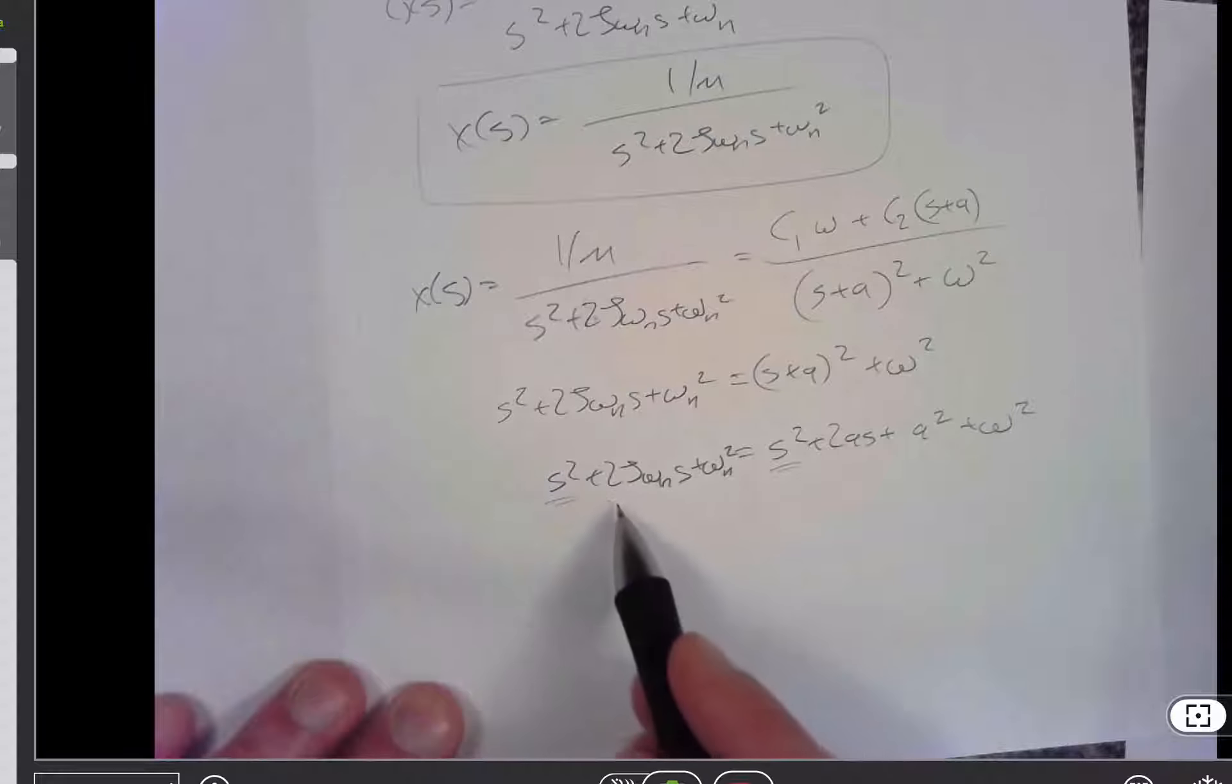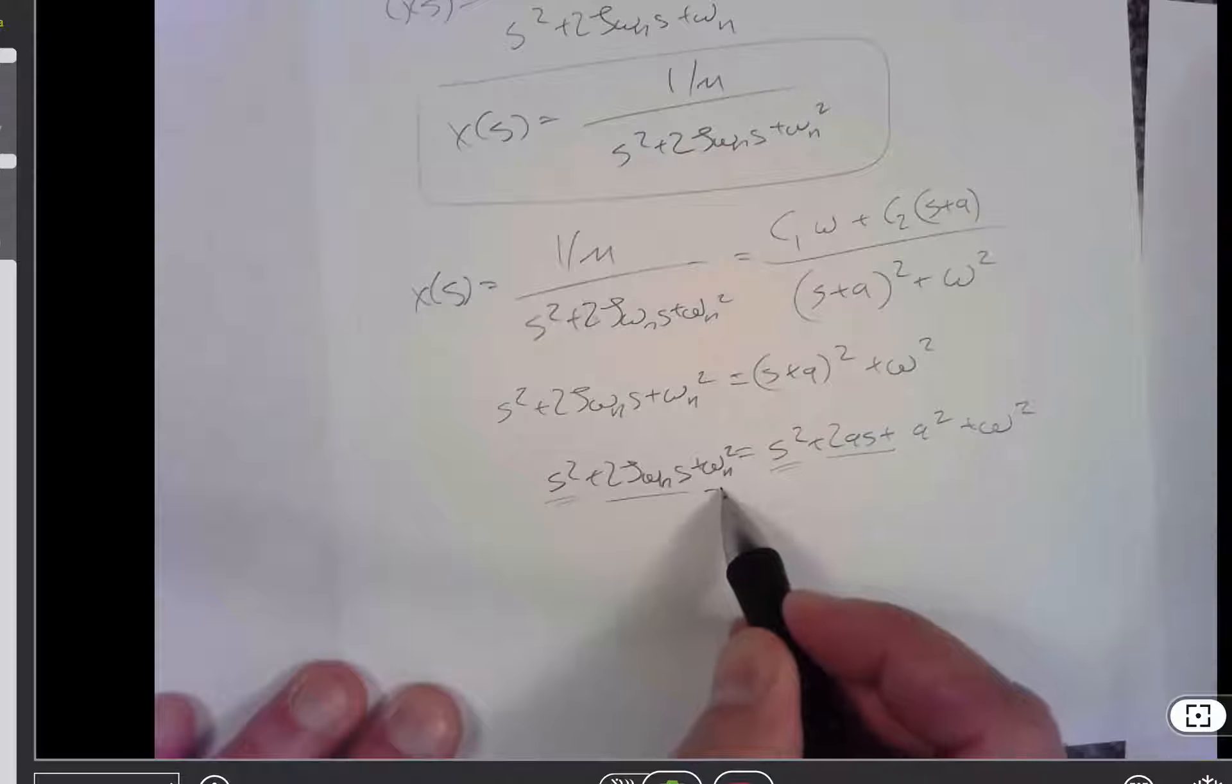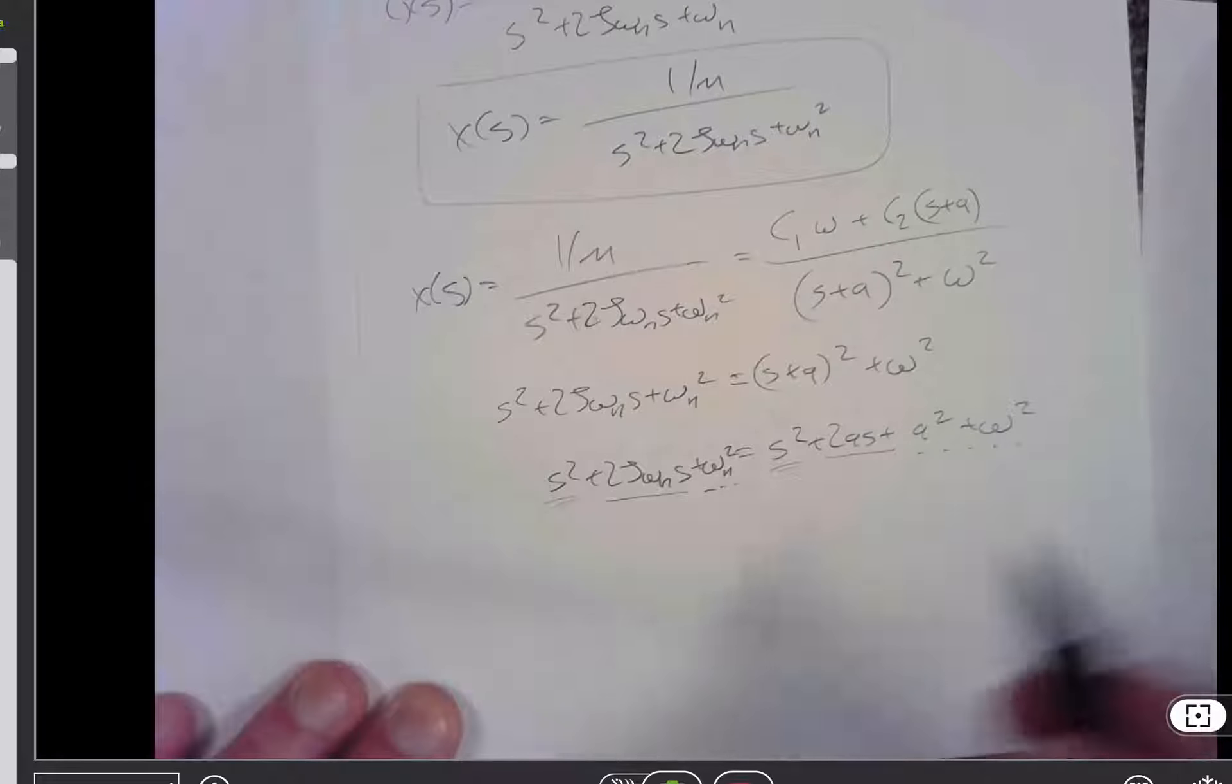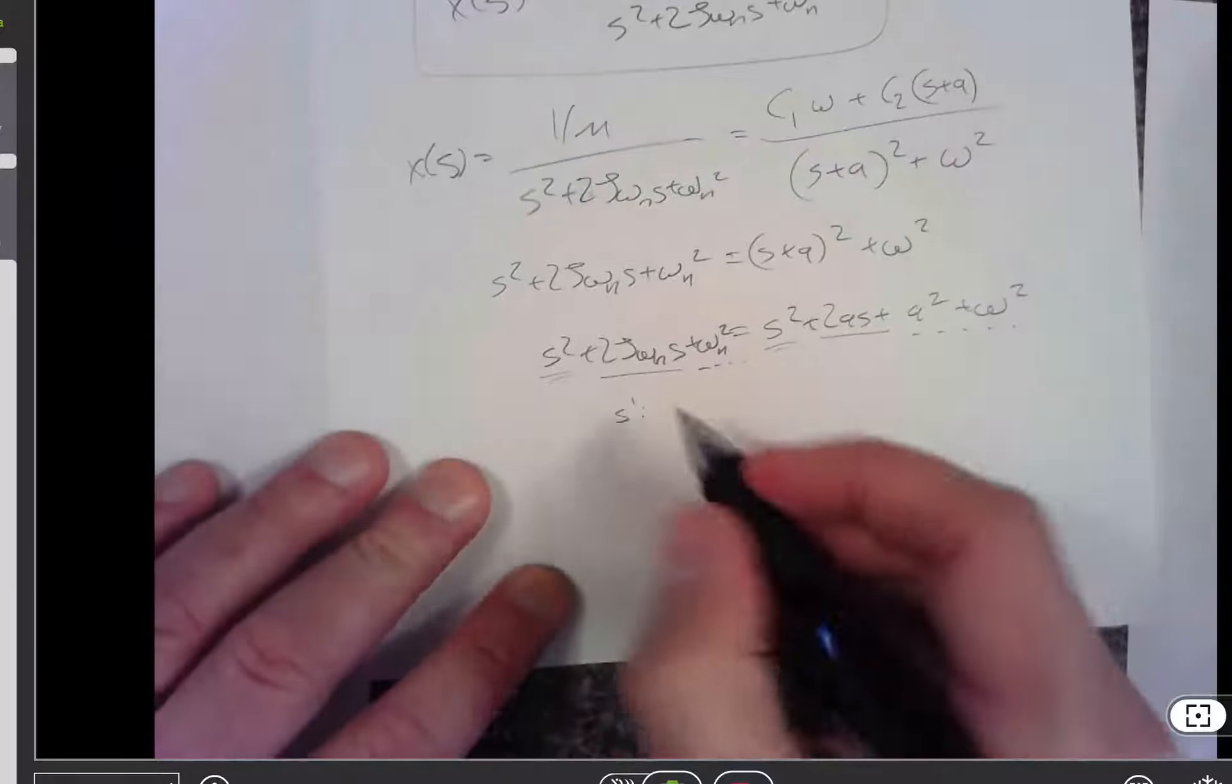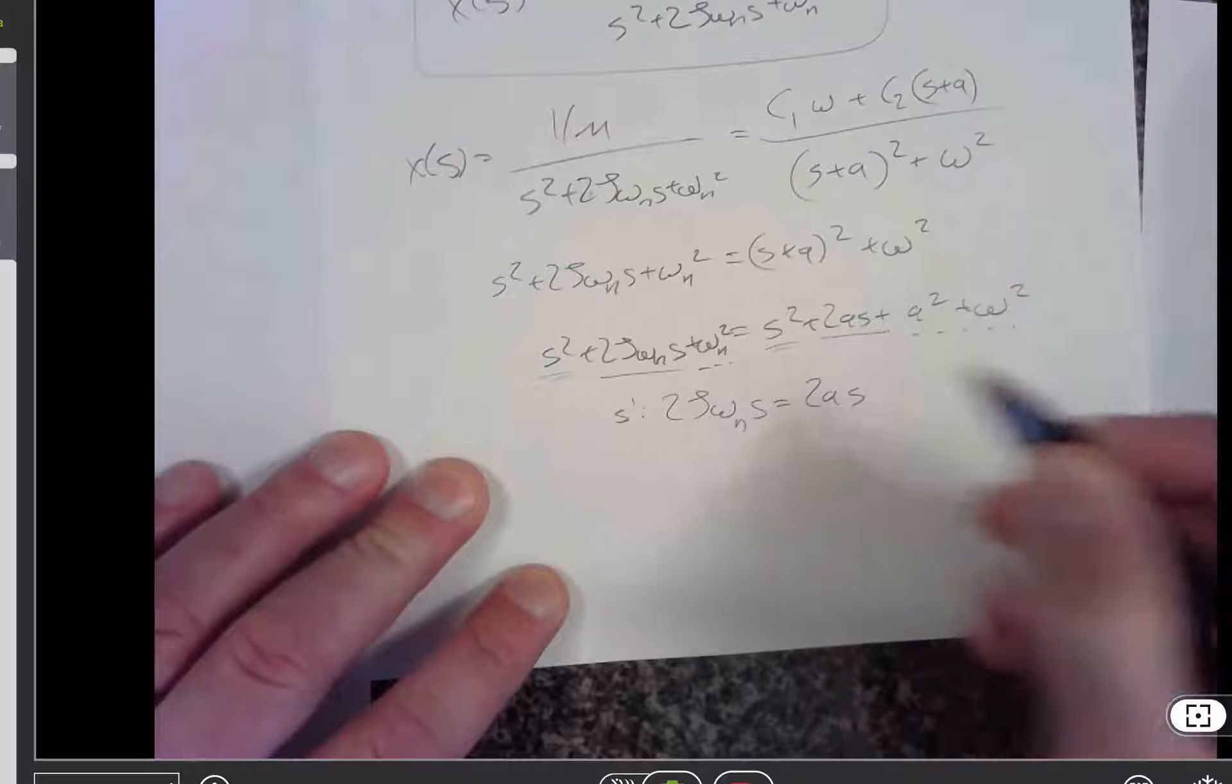Well, that's true, but it's not super helpful. Then I've got this s to the first term, and then I've got this s to the zero term. So if I look at s to the first, we're saying that 2 zeta omega ns is equal to 2 a s.